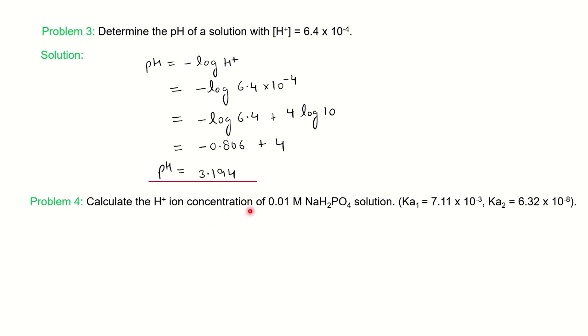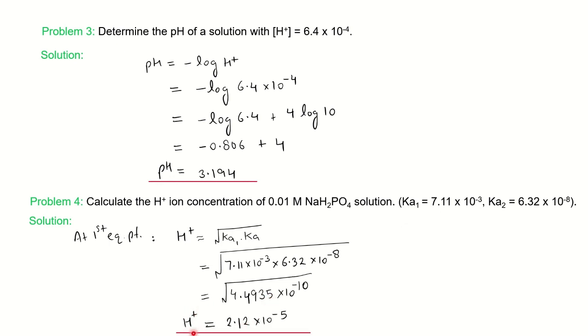Next is: calculate the H⁺ ion concentration of 0.01 molar of NaH₂PO₄. Ka1 and Ka2 are given. So one way is you can use a straightforward formula here. The species which is present is H₂PO₄⁻. So that is first equivalence point and we know the formula for H⁺: √(Ka1 × Ka2). Both the values are given here. You can find out the answer which approximately will be the same. H⁺ is 2.12 × 10⁻⁵ molar. So by using this equation, you can calculate it quickly. The question belongs to two marks.